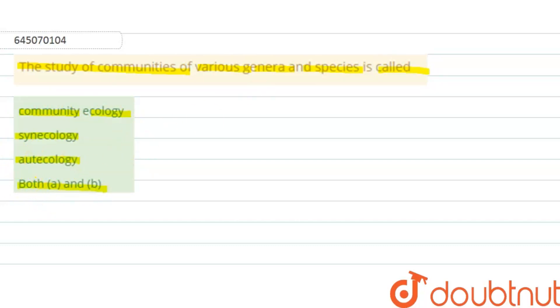Okay, so here the right answer is both a and b, right. So community ecology, that is the study of organization and functioning of communities.